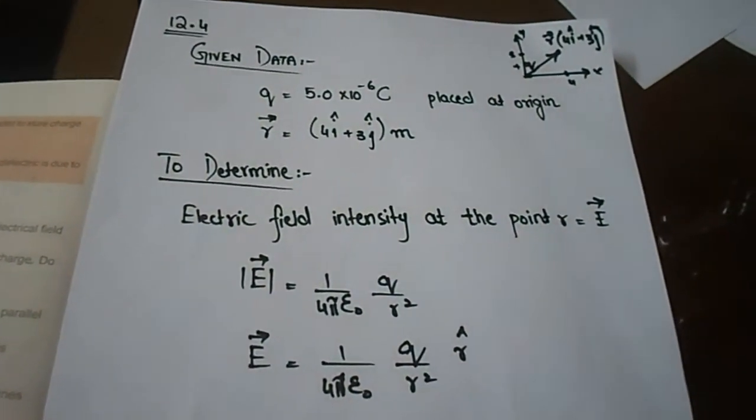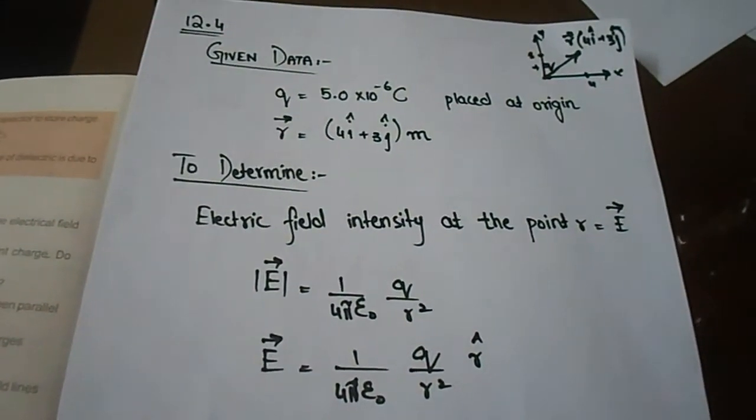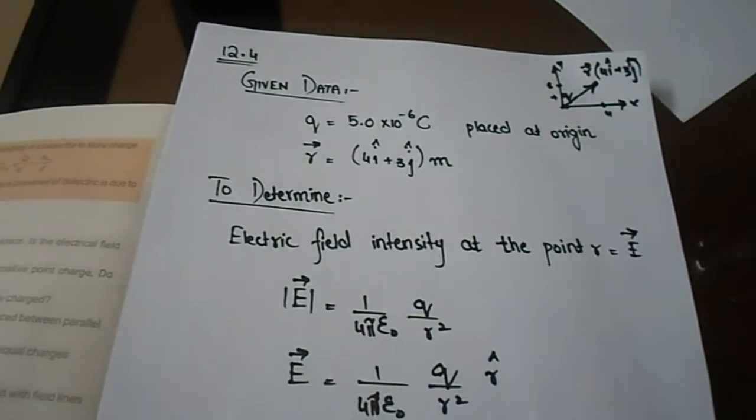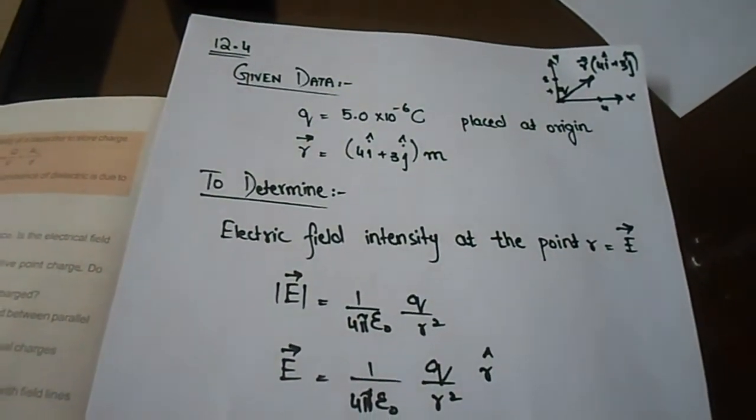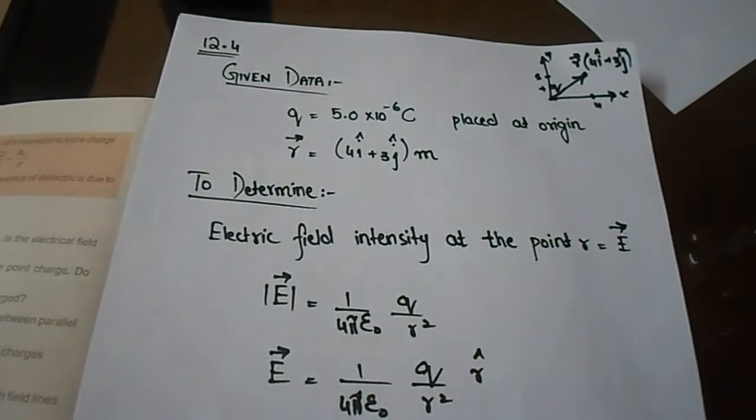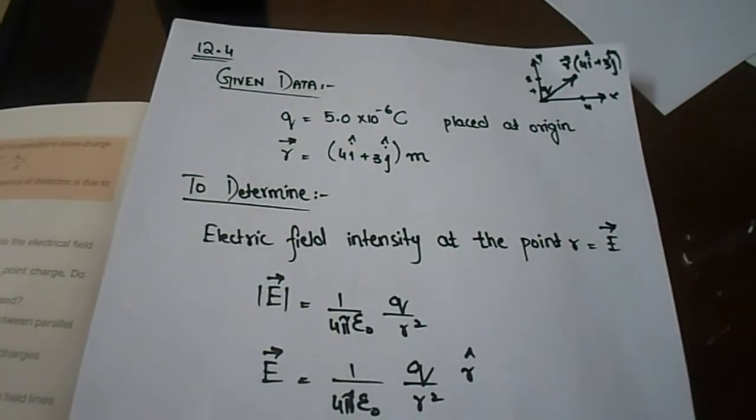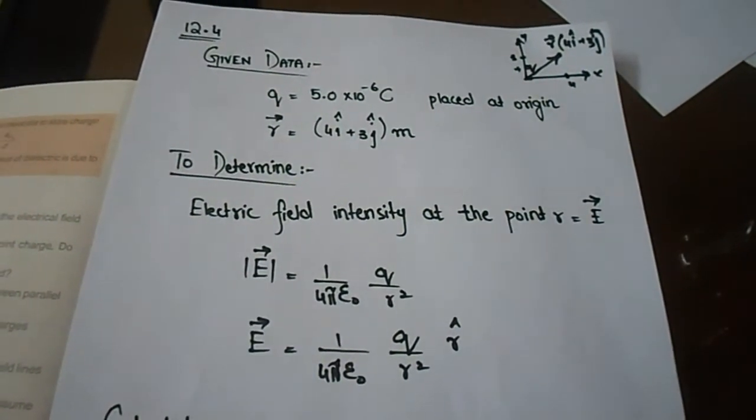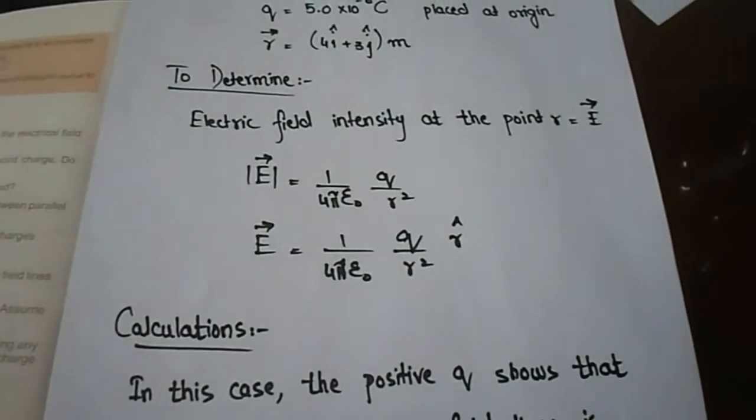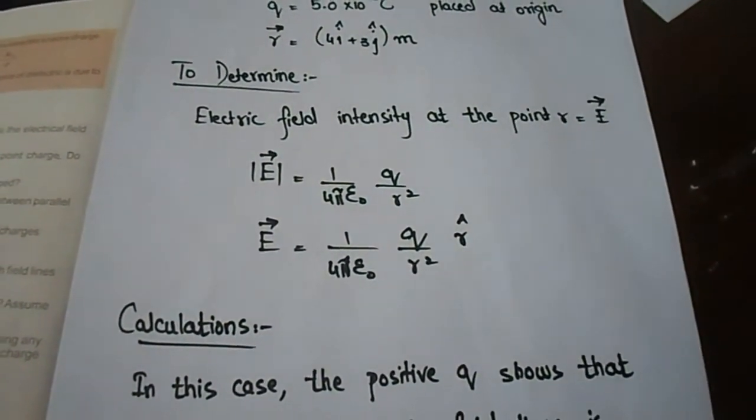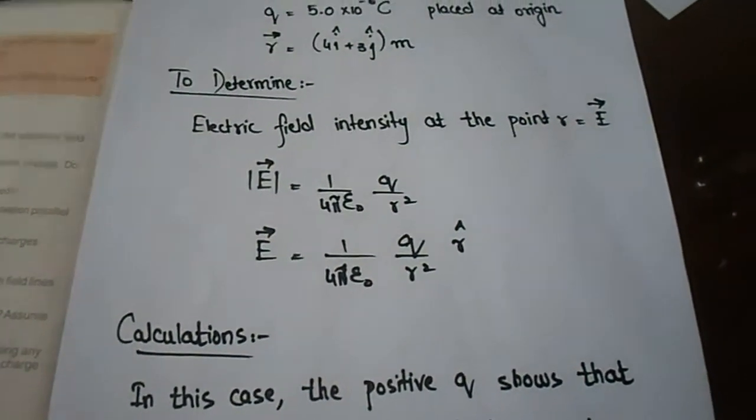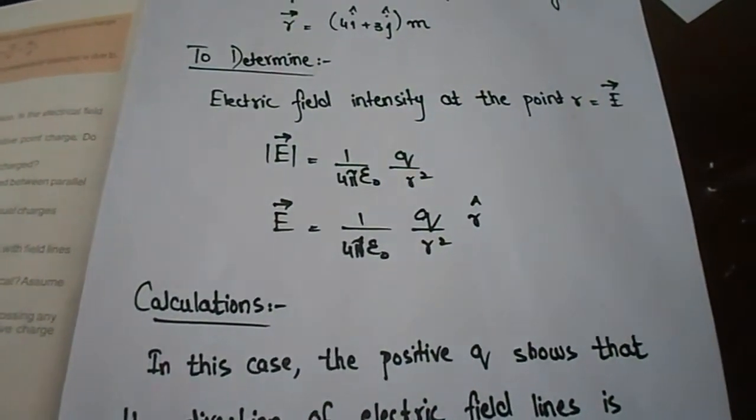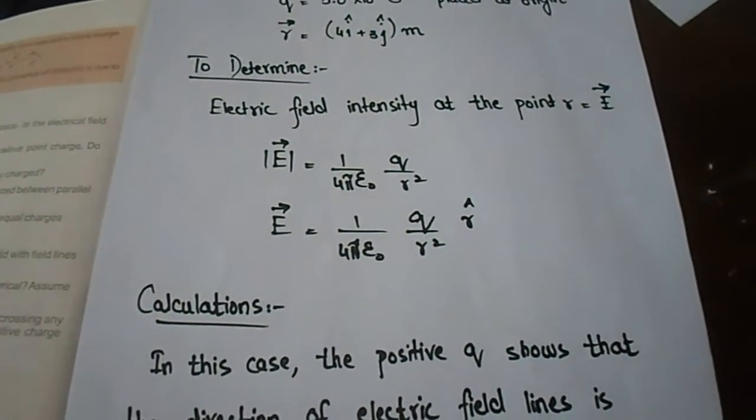The formula is 1 over 4 pi epsilon naught q divided by r square, in case we just want to find magnitude.